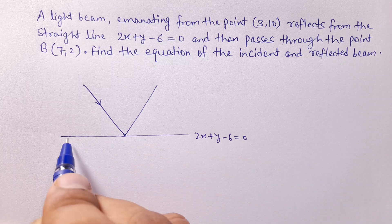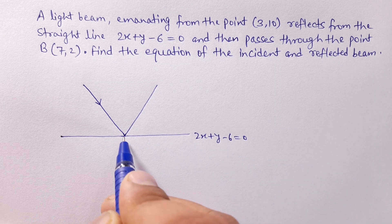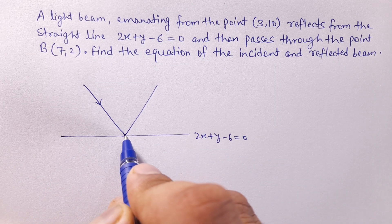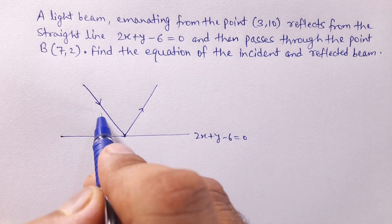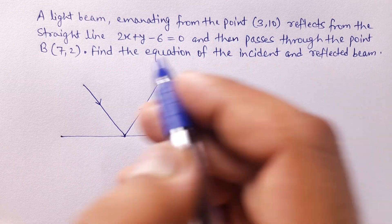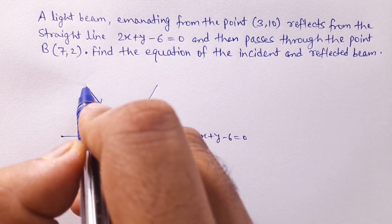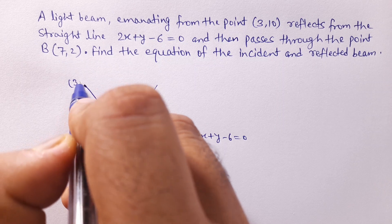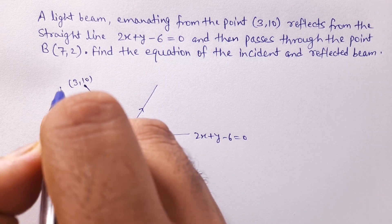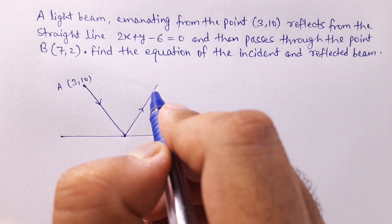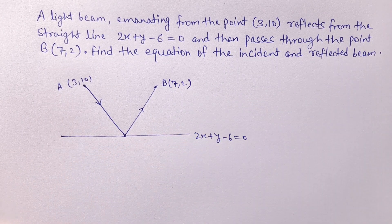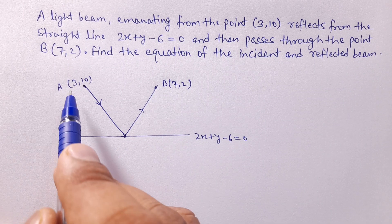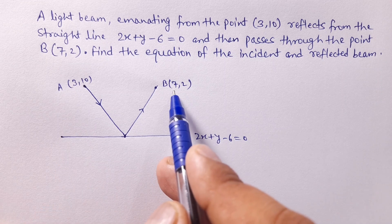This is the incident beam — the ray hits the line mirror and reflects in this direction. We have to find these two equations. Given that the beam is emanating from point A(3,10), and B is (7,2). There is a hidden clue here which we need to know.